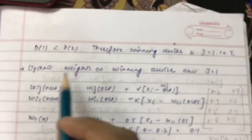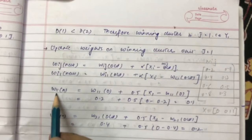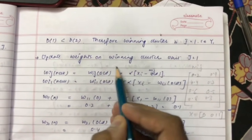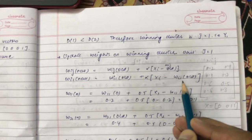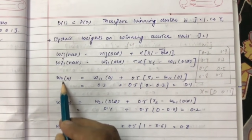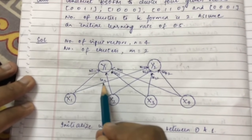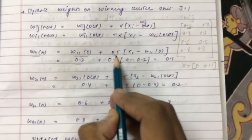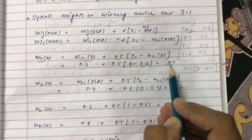We apply weight update on the winning cluster unit j = 1. The formula is: wy1(new) = wy1(old) + alpha * (xi - wy1(old)). So w11(new) = 0.2 + 0.5 * (0 - 0.2) = 0.1. Similarly, w21(new) = 0.4 + 0.5 * (0 - 0.4) = 0.2.